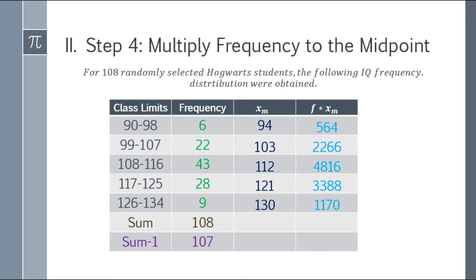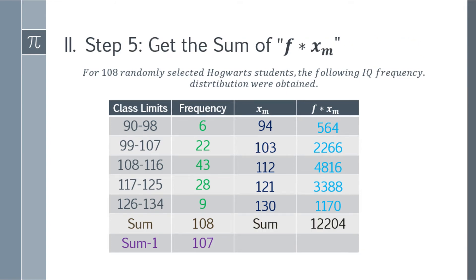Let's go to step 4. We need to multiply the frequency in green by the midpoint, by x sub m. So 6 times 94 is 564. 22 times 103 is 2,266. 43 times 112 is 4,816. 28 times 121 is 3,388. And the last one, 9 times 130, is 1,170. We have another column now: f times x_m. We need to get the sum of these products. Add 564 plus 2,266 plus 4,816 plus 3,388 plus 1,170, and you will get a sum of 12,204.